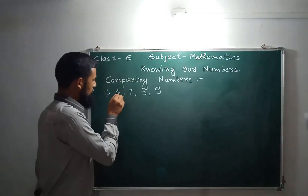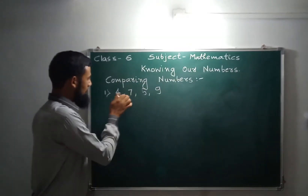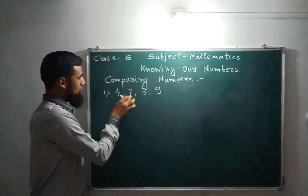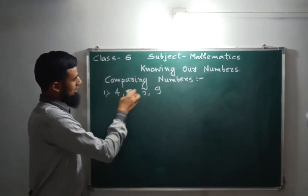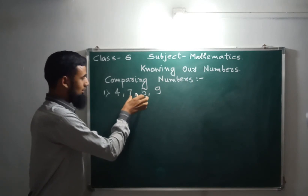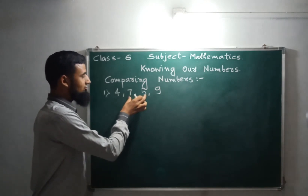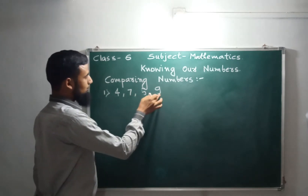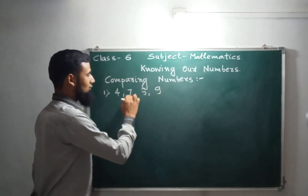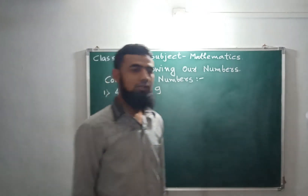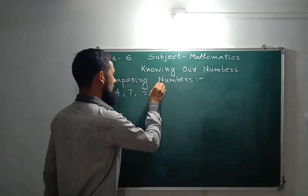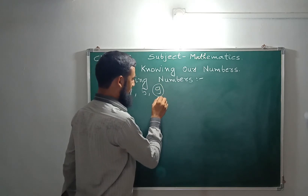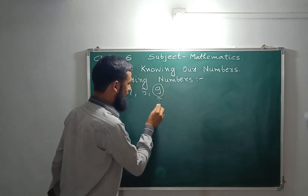We will compare these two numbers: 4 and 7 — which number is bigger? Seven. Now compare 7 and 5 — which is bigger? Seven. Now compare 7 and 9 — which is bigger? Nine. So the answer is nine. Nine is the biggest, the greatest number.